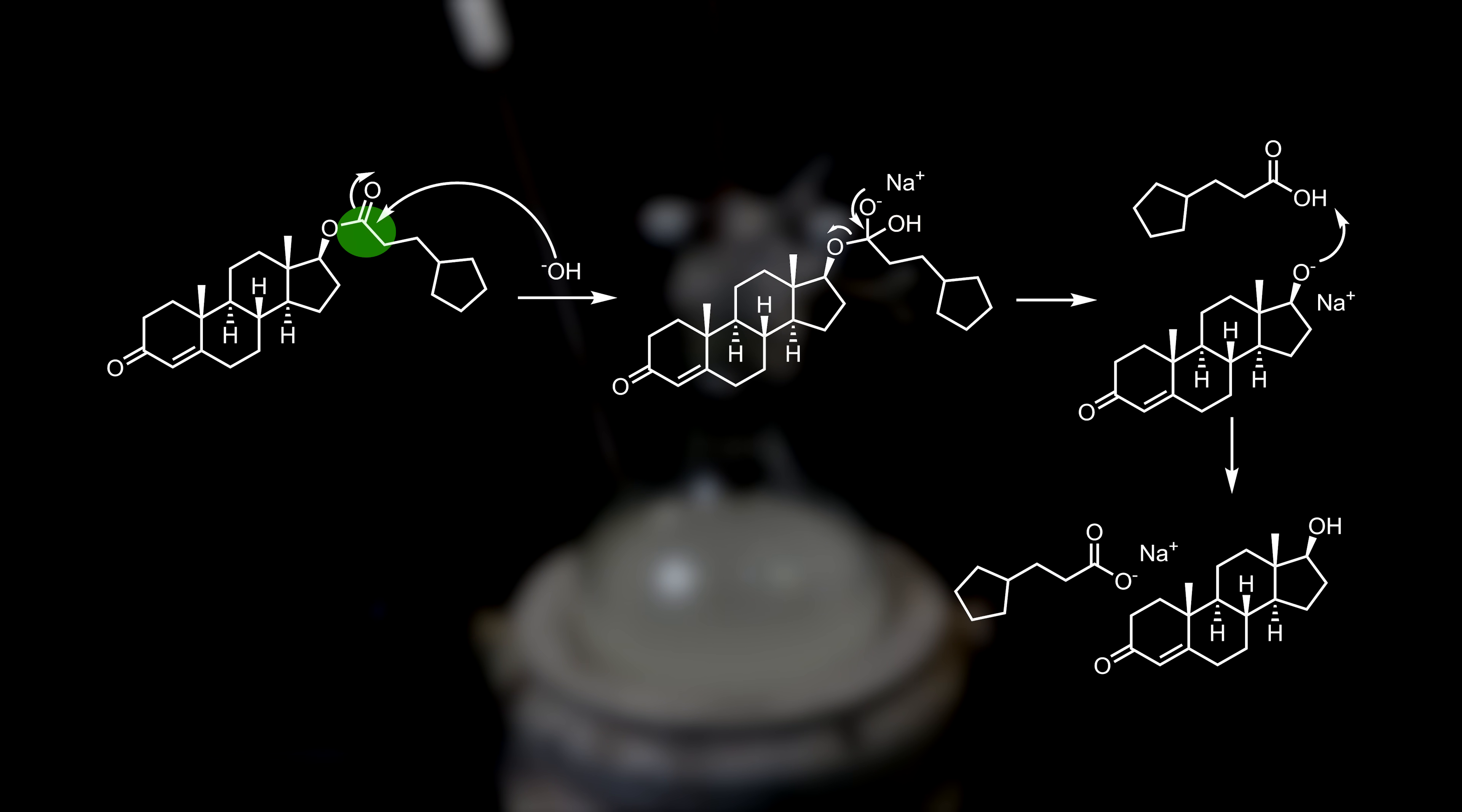In the resulting intermediate, this double bond returns, and kicks off testosterone as an alkoxide, and leaving cipionic acid. The acid is quickly deprotonated by the alkoxide, as it is a much stronger base, giving the neutral testosterone and the salt sodium cipionate.